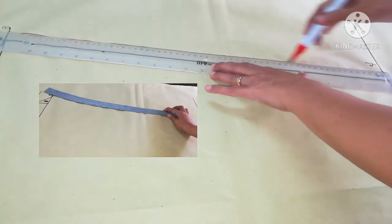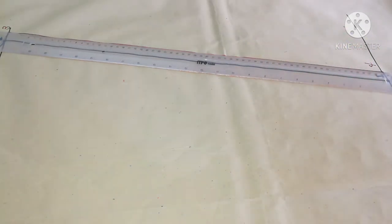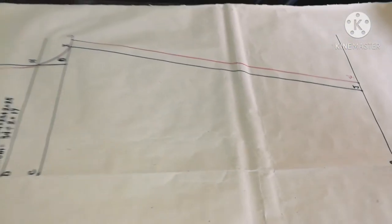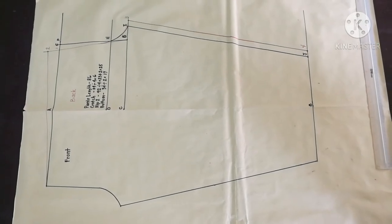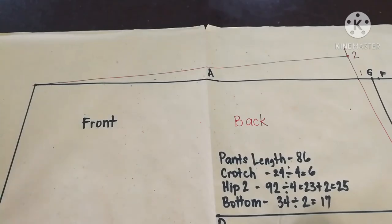If you use hip curve in shaping the front, then use it on the back. And now we are done with the front and back of pajama trousers. Now let's have the allowance.